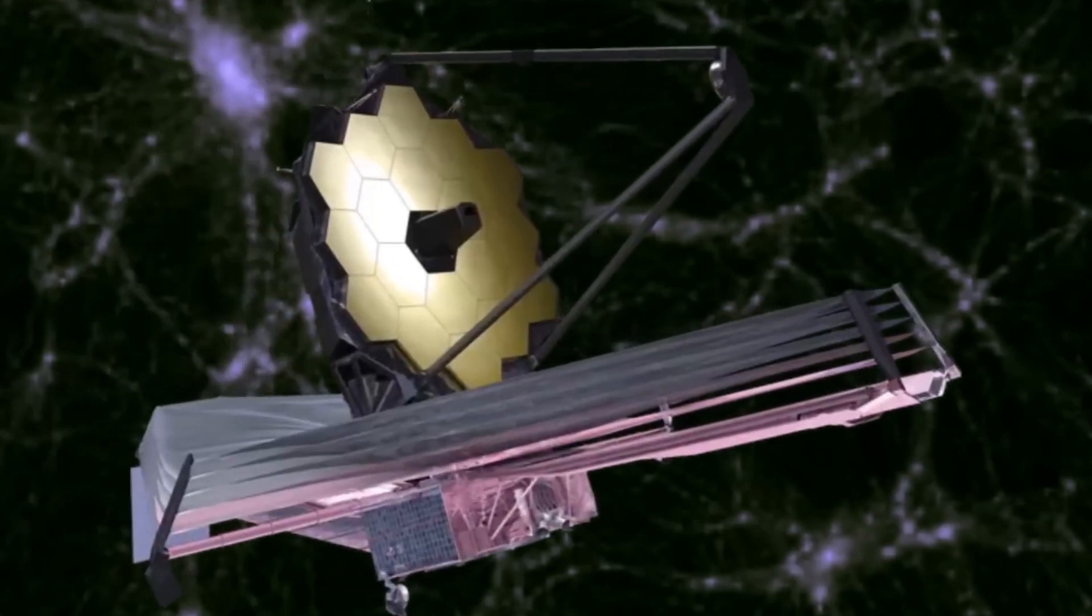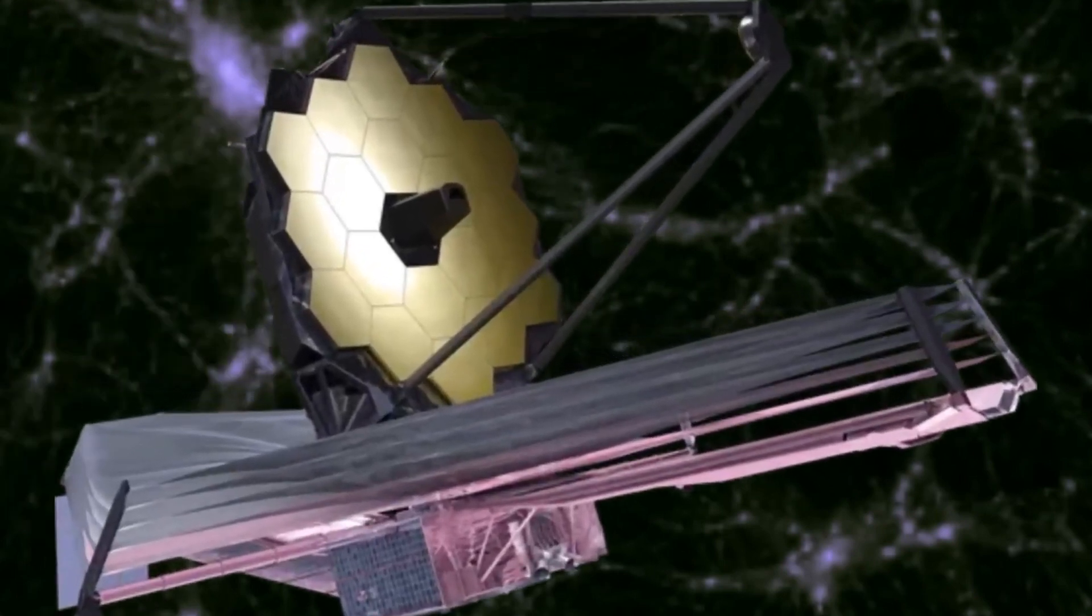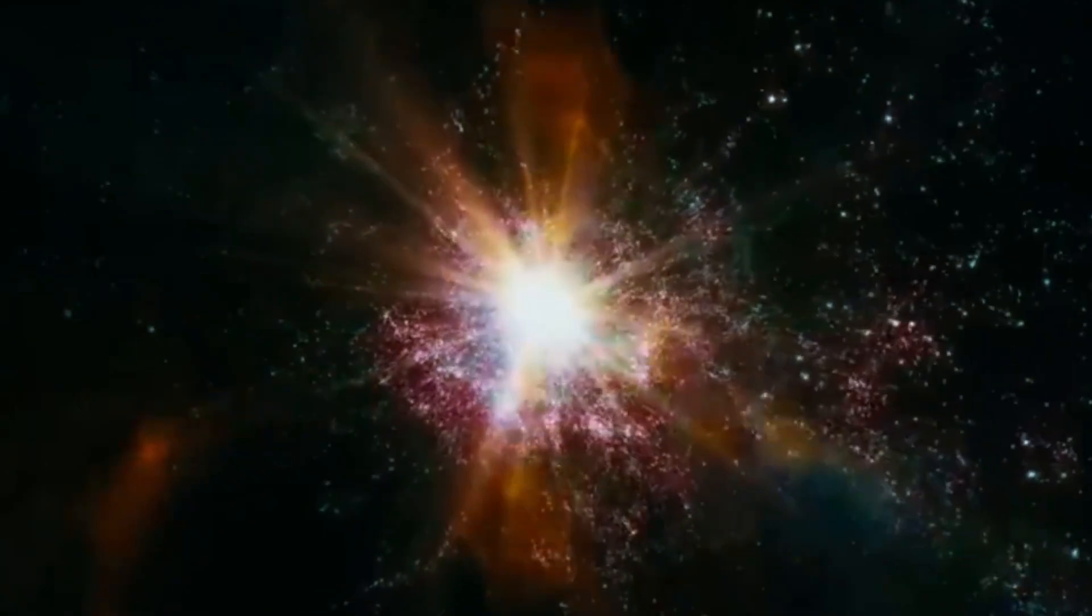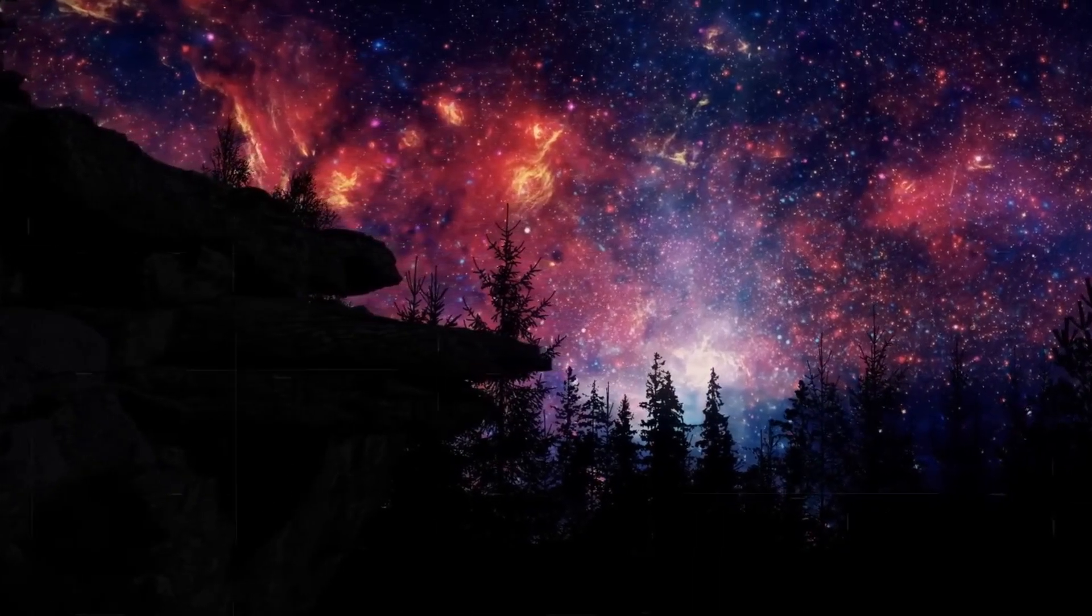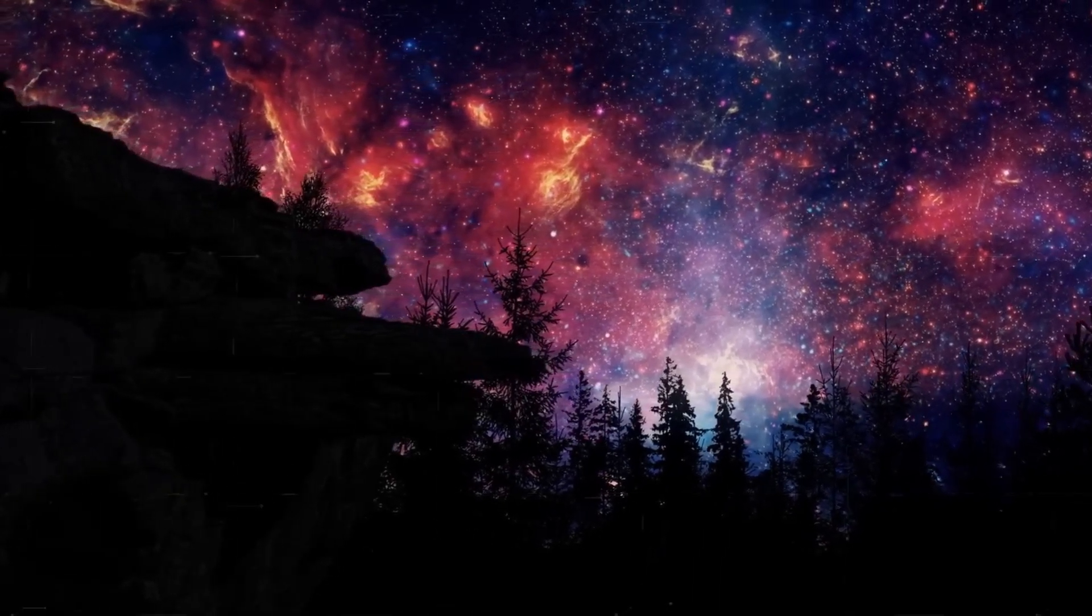Betelgeuse was detected speeding across the interstellar medium at a rate of 30 kilometers per second after being ejected from its home in the Orion OB1 Association, which contains the stars in Orion's belt. The bow shock from this speeding star spans over 4 light-years across.